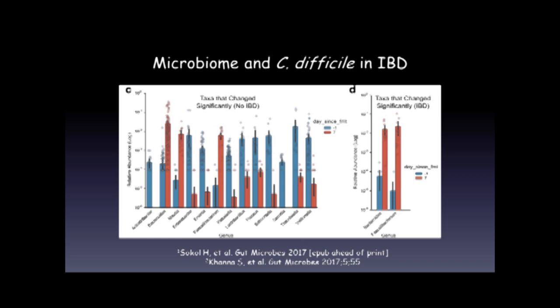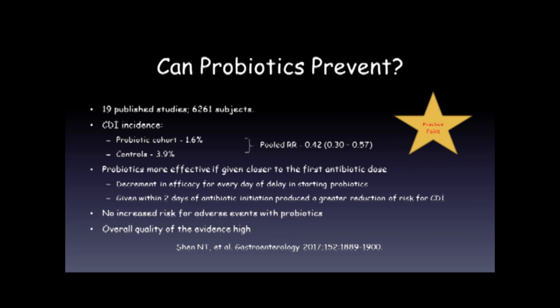Can we do anything to prevent C. difficile-associated disease? A recently published meta-analysis looked at 19 studies over 6,000 subjects. In the probiotic cohort, the likelihood of C. difficile was only 1.6 percent compared to 3.9 percent in controls — a very significant reduction in risk. Probiotics were more effective if given closer to the first antibiotic dose, with efficacy falling off with every day of delay. If given within two days of antibiotic initiation, they produced a greater effect. There was no increased risk of adverse effects, and the overall quality of evidence was regarded as high.